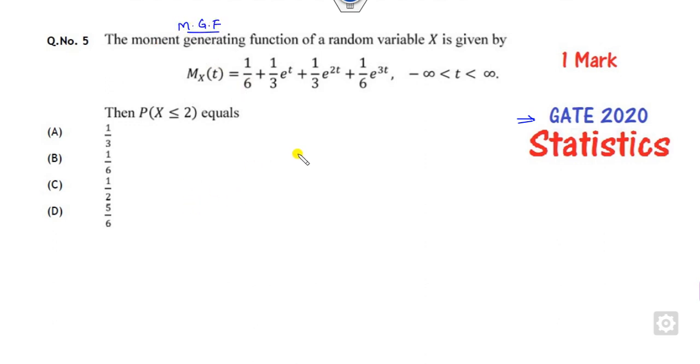How you can solve such questions we will see within 30 seconds. There are two ways. First, you have to think which distribution has such kind of moment generating function.